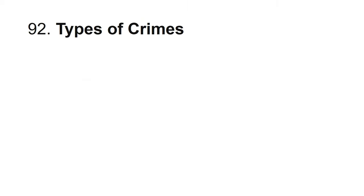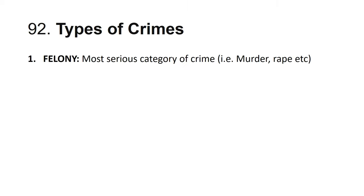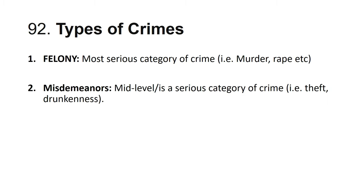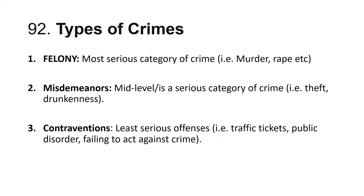Types of crimes — there are three: felony, the most serious category, including murder and rape; misdemeanors, mid-level serious offenses such as theft and drunkenness; and contravention, the least serious offense such as traffic tickets, public disorder, and failing to act against crime.